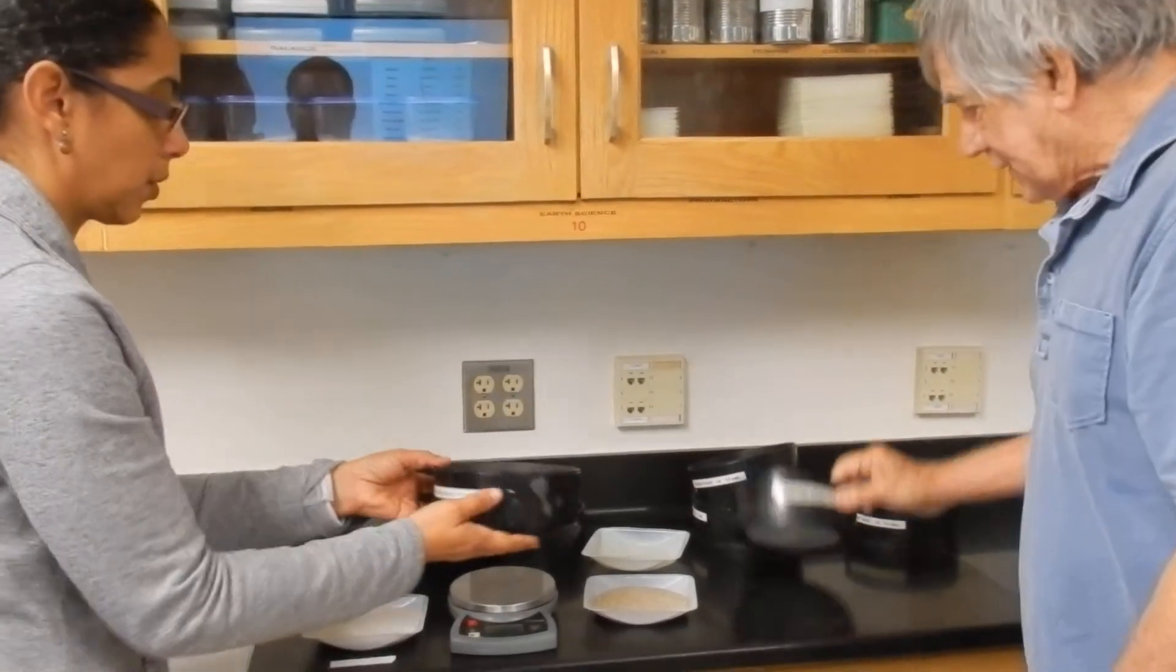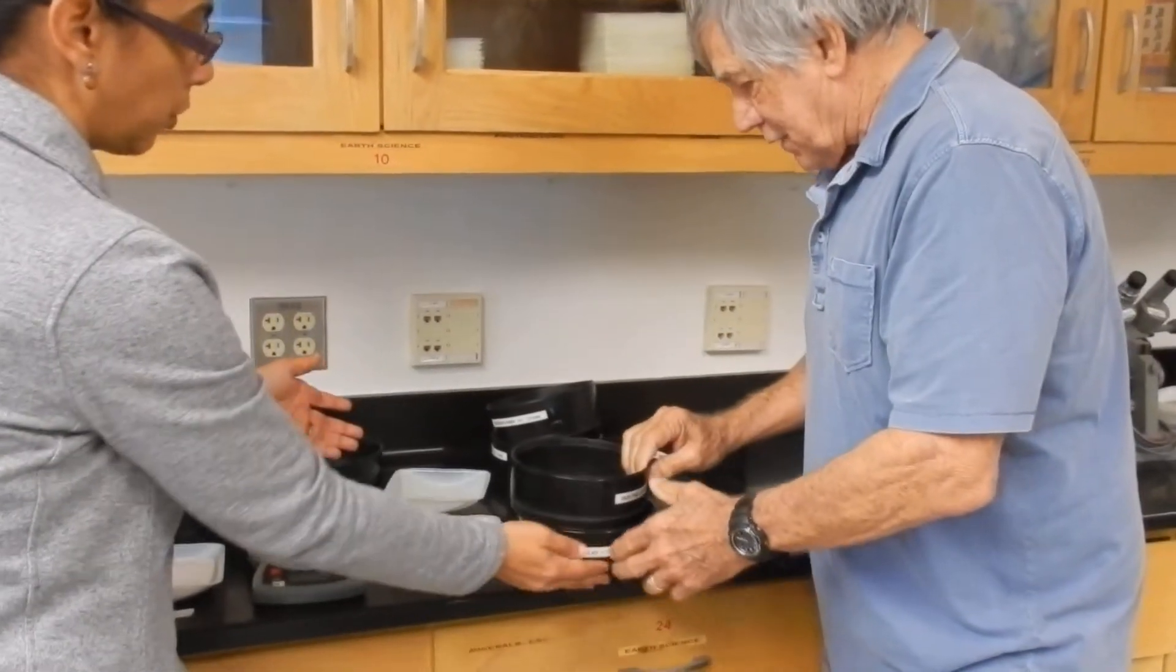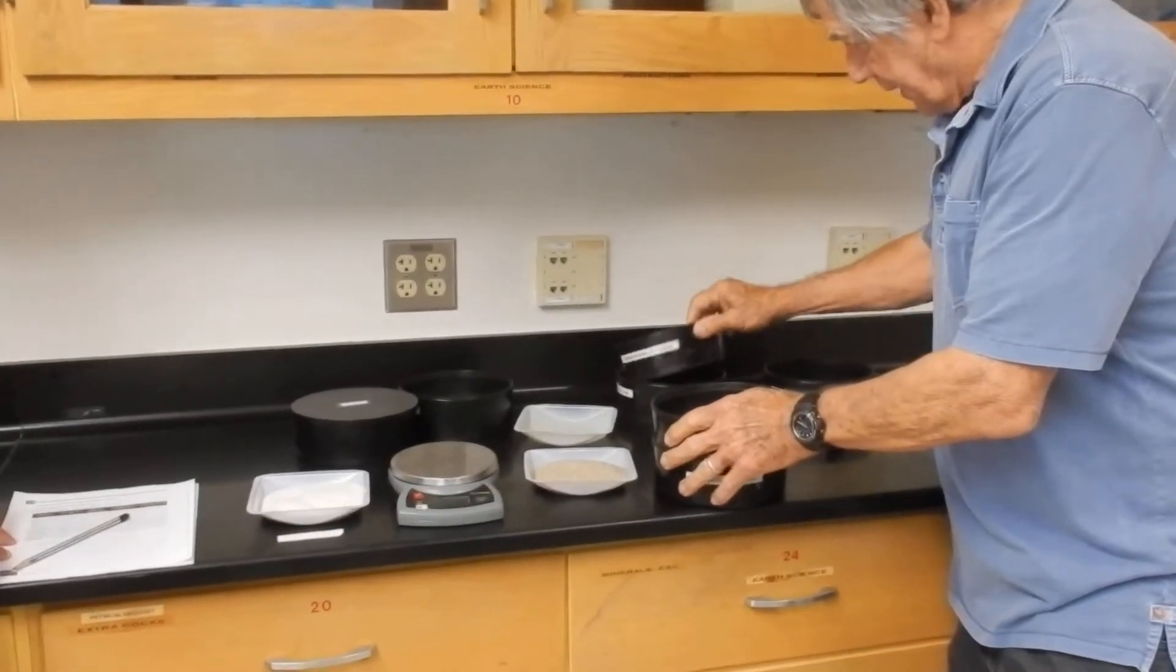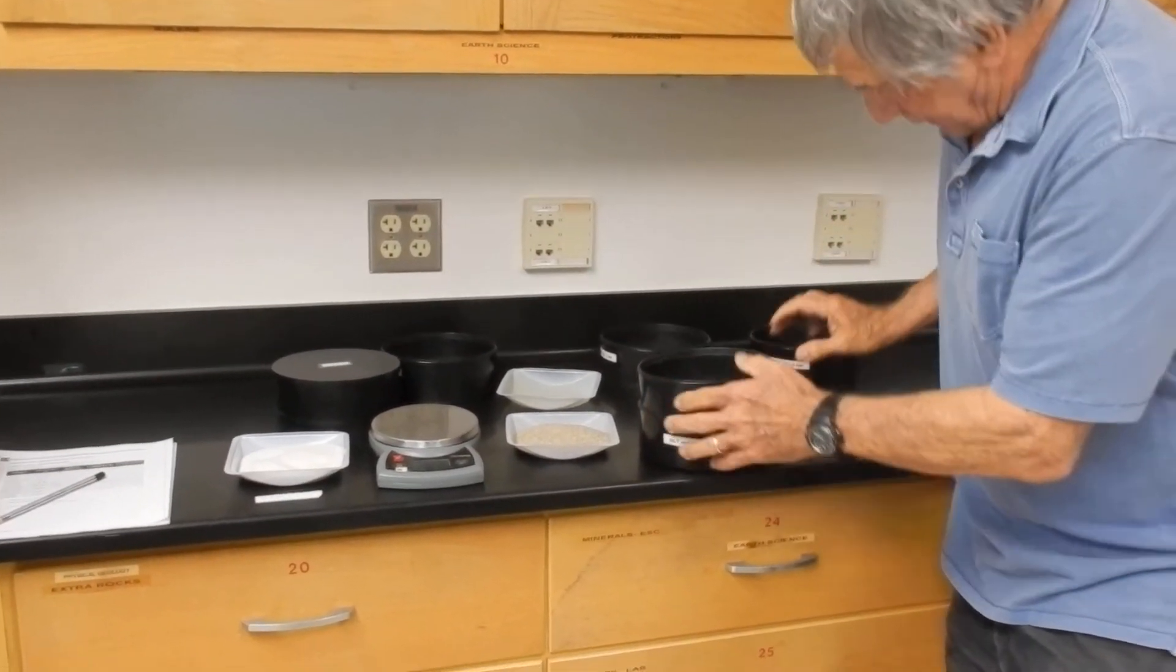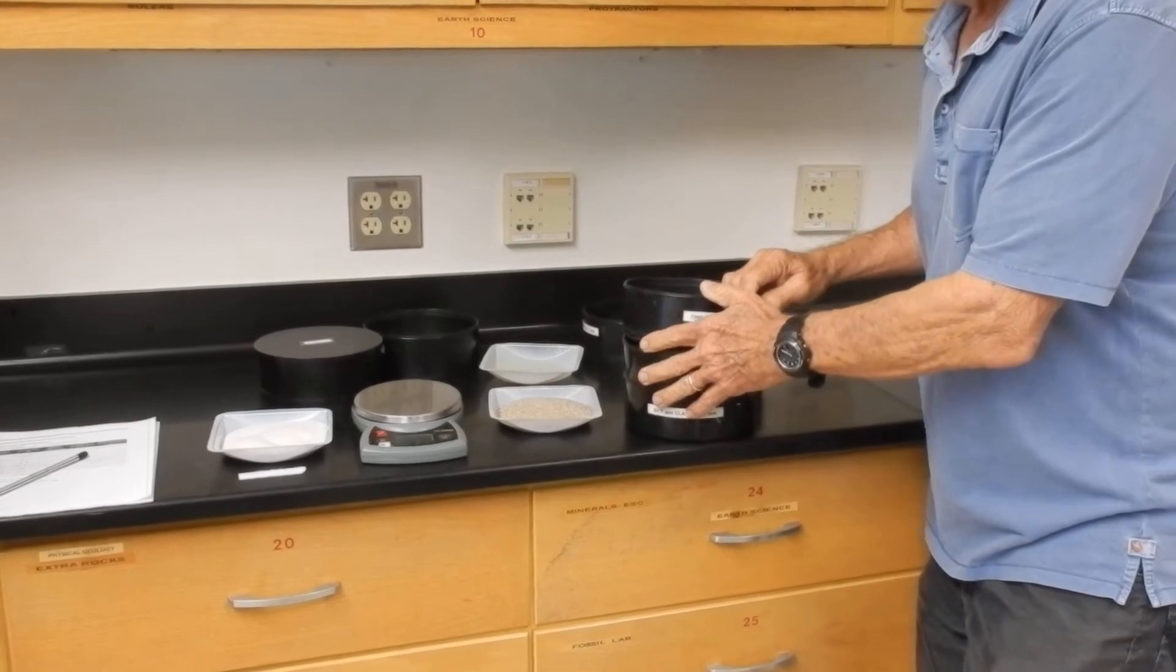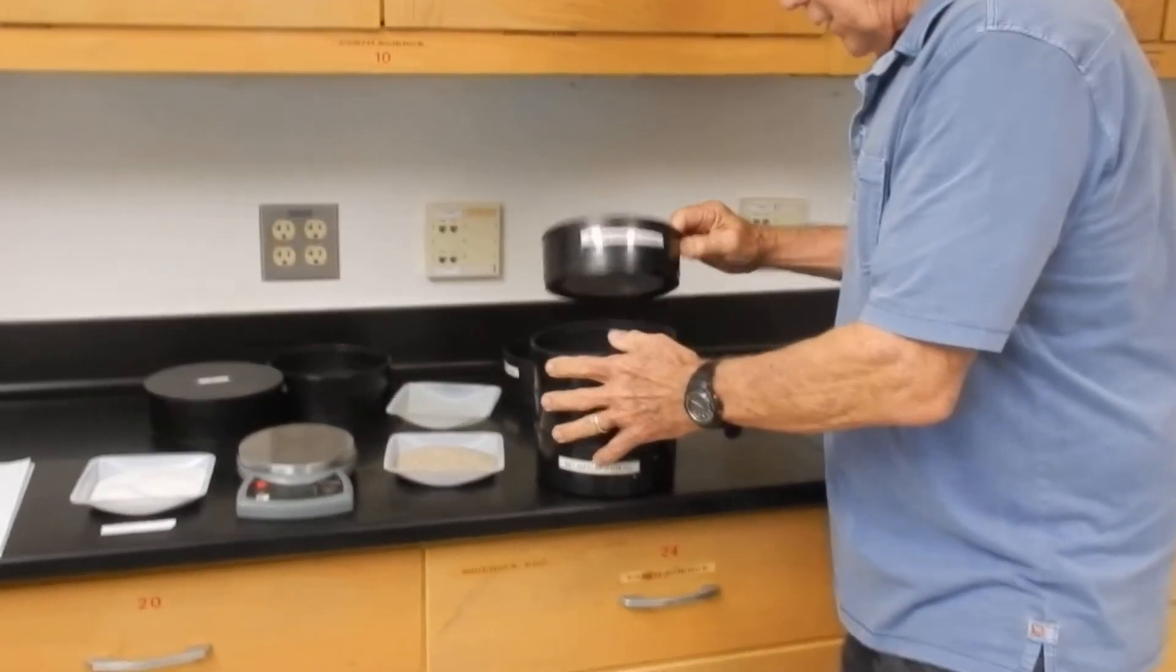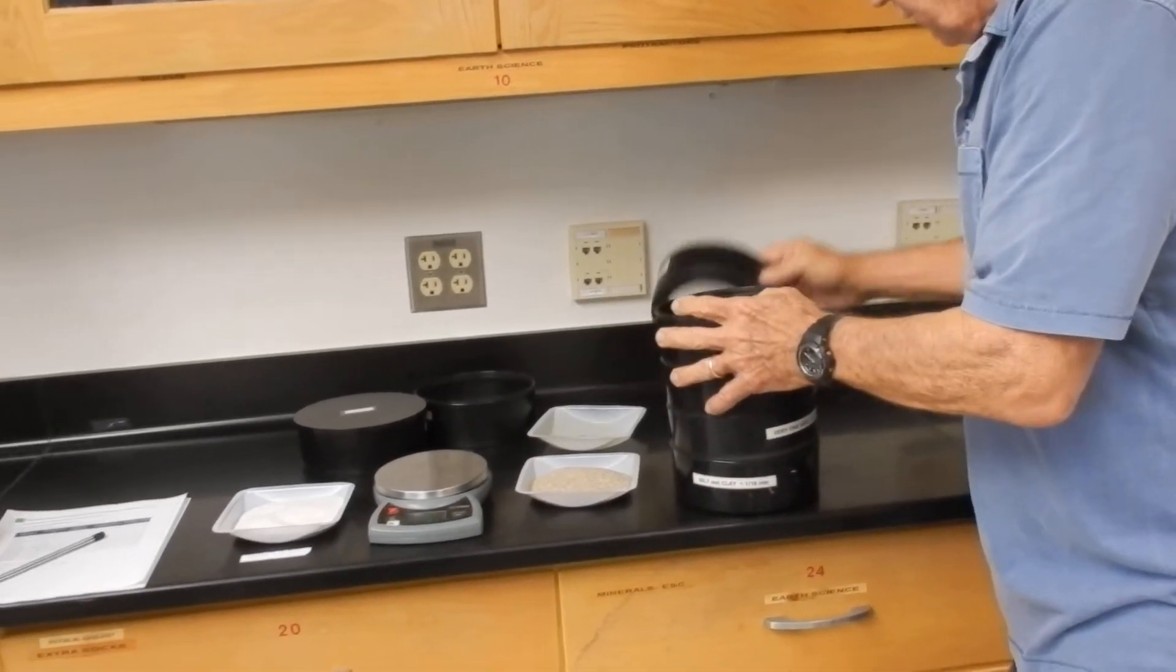So we'll put the sieves back together in the right order, starting with the smallest on the bottom. Right from the silt and clay, very fine sand, here we are with fine sand, medium sand. These sieves are in nice shape, coarse sand, very coarse sand, and finally gravel. Now that's all recorded in our data sheet.